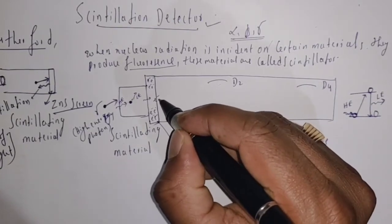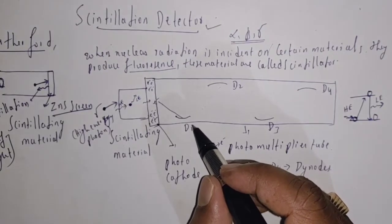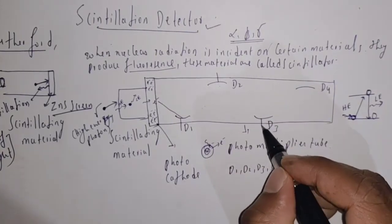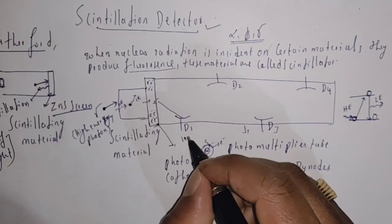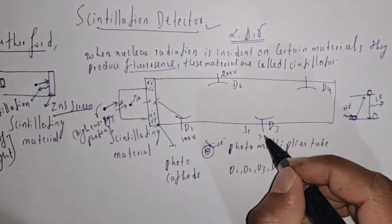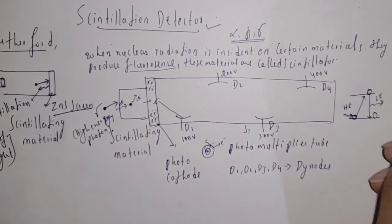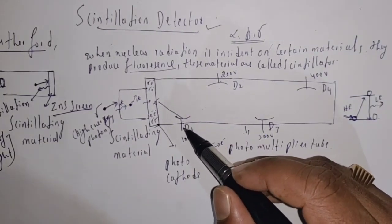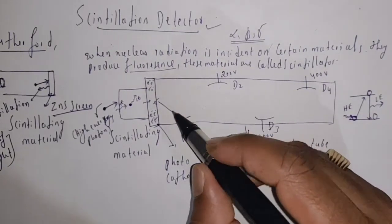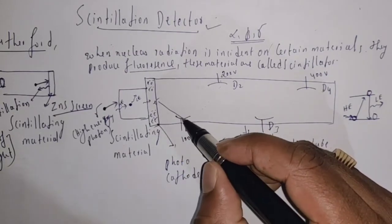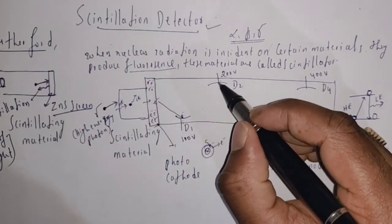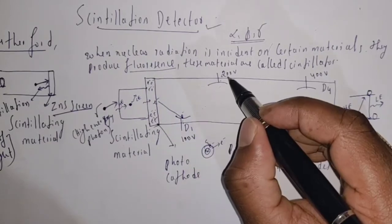This emitted electron is incident on dynode D1. The dynodes are connected to a battery: D1 is connected to 100 volts, D2 to 200 volts, D3 to 300 volts, and D4 to 400 volts. We can see that for every dynode there is an increase in potential. When this ejected electron is incident on dynode D1, it is attracted towards the second dynode because of the higher potential.